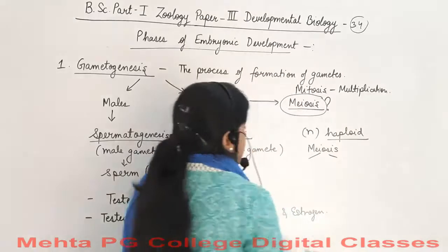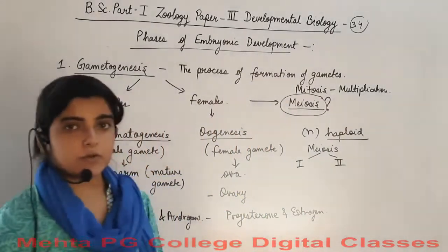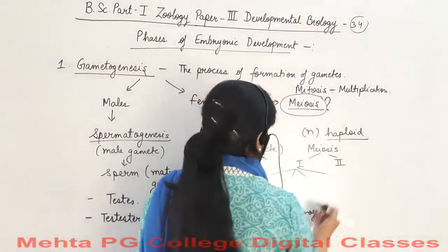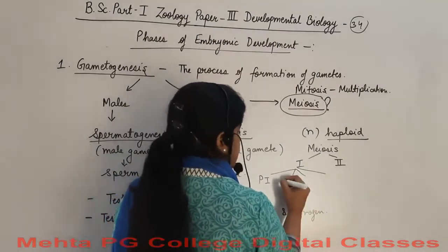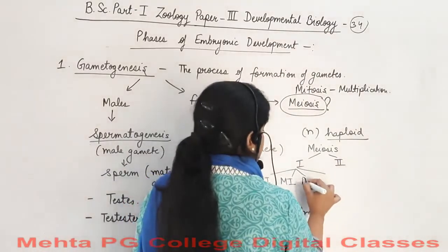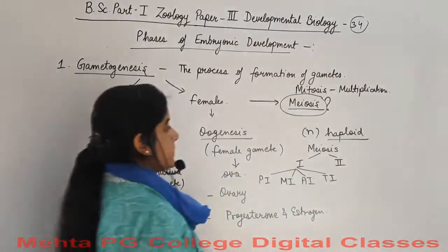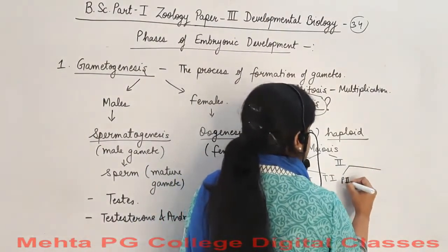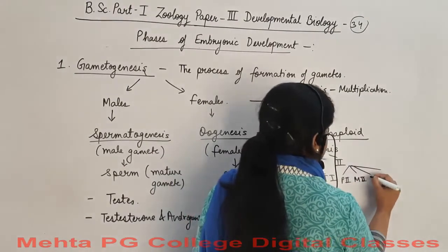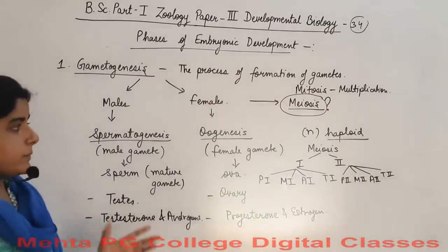Meiosis is divided into two parts: meiosis first and meiosis second. Meiosis first contains four stages: prophase first, metaphase first, anaphase first, and telophase first. Meiosis second also contains four stages: prophase second, metaphase second, anaphase second, and telophase second.